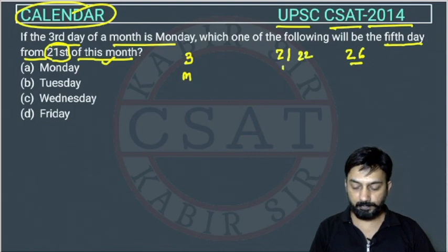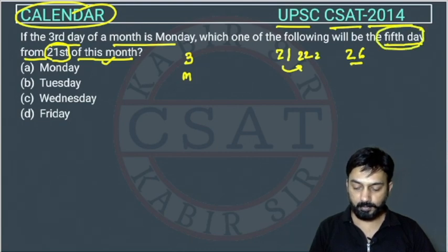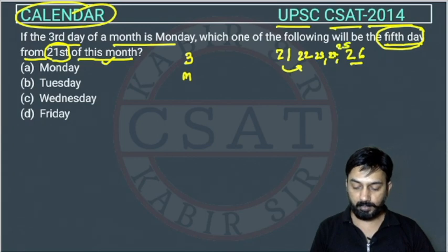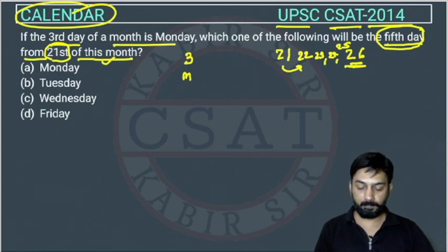Because 22nd will be the first next day. The question is asking the fifth day: 22 is first, 23 is second, 24 is third, 25 is fourth, 26 is fifth. So, this is the day we have to find.